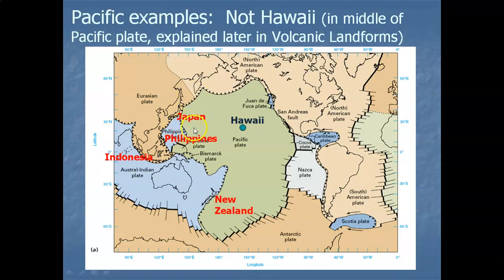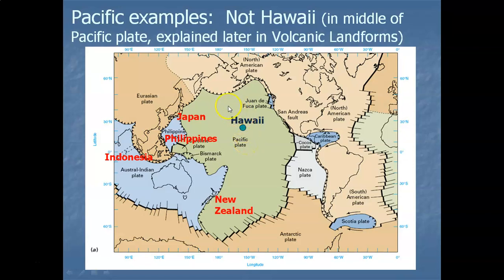Those are examples of two ocean plates meeting and creating volcanic islands forming arcs. Now you might be thinking of the Hawaiian Islands — they are volcanoes in the Pacific, but Hawaii is not formed in this manner. The Hawaiian Islands are not at a plate boundary. They are actually located right in the middle of the giant Pacific plate, so Hawaii is not an example of two plates meeting.